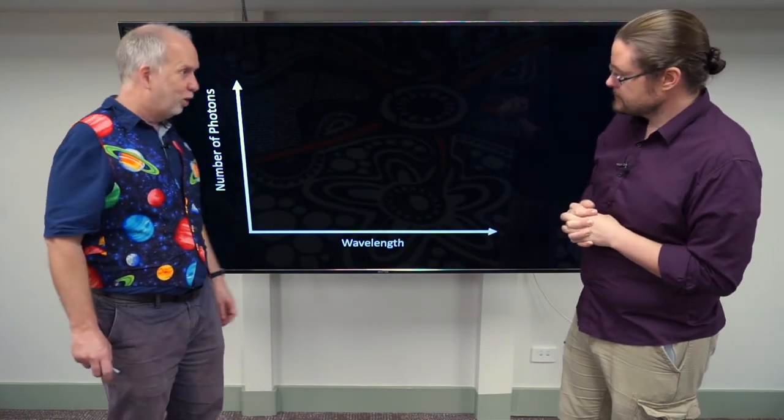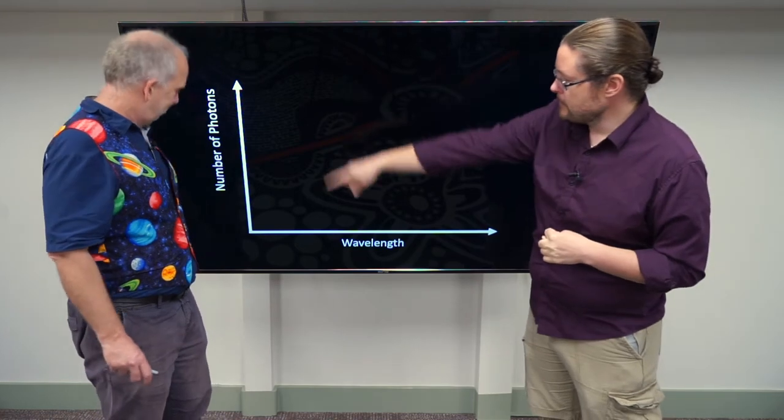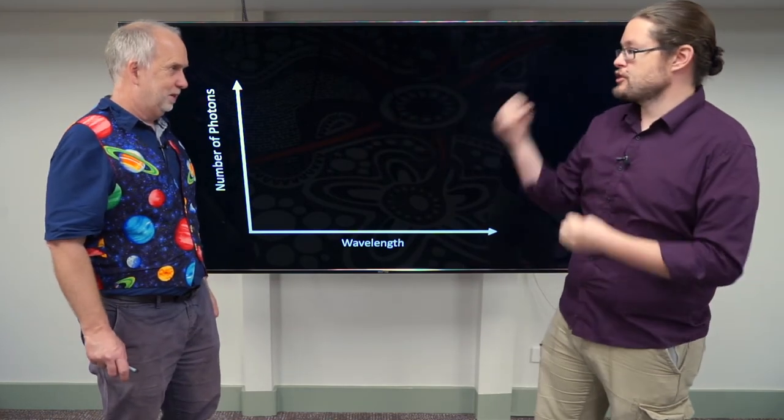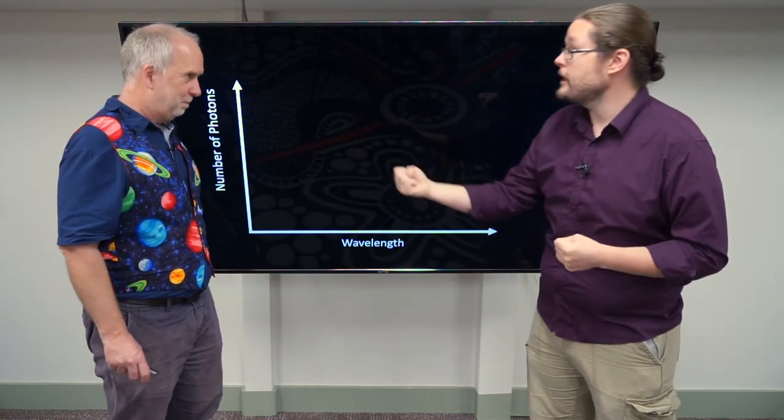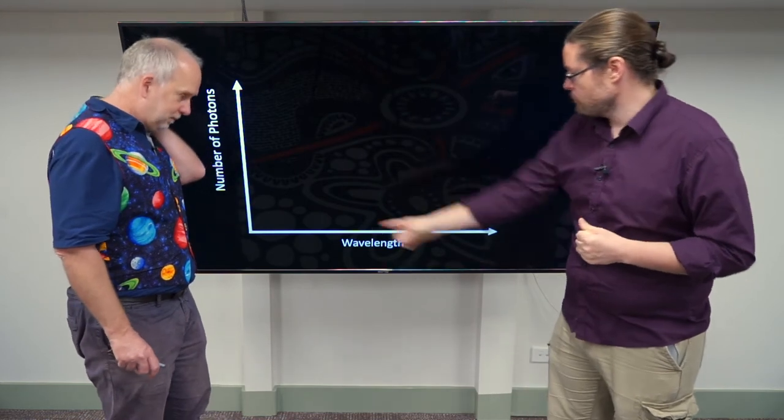What does a spectrum look like? Well, typically, it's a graph. So we have the number of photons, which is essentially how much of that light, quantity-wise almost, we're measuring versus the wavelength, the color.